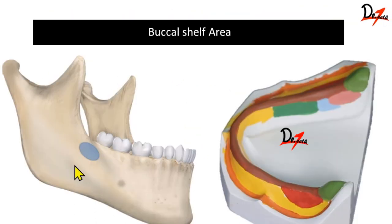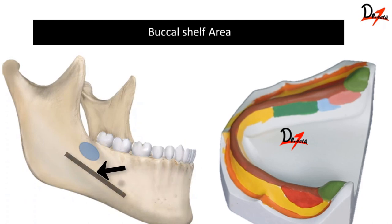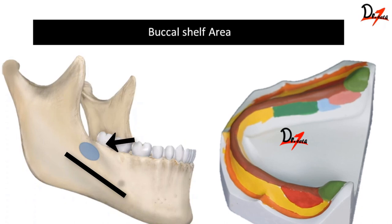Now the buccal shelf area — as you can see in this picture. The buccal shelf area does not resorb easily because the occlusal forces act perpendicular — at 90 degrees — to the buccal shelf area, making it a stress-bearing or load-bearing area. Its boundaries are: the external oblique ridge, the crest of the alveolar ridge, and distally the retromolar pad.